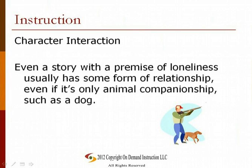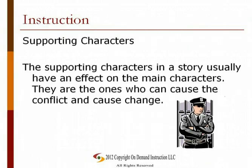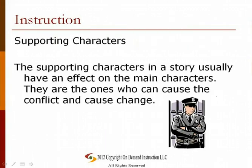Characters rarely exist on their own. Even a story with a premise of loneliness usually has some form of relationship, even if it's only animal companionship such as a dog. One of the most interesting insights of character relationships is how a character acts differently around other characters. For example, a character that is very confident and successful may turn into a blithering idiot around a member of the opposite sex. The supporting characters in a story usually have an effect on the main characters — they are the ones who can cause conflict and change. In the example of the potential criminal, he could have interacted with a cellmate who convinced him to continue his life of crime, or with a policeman who convinced him otherwise.